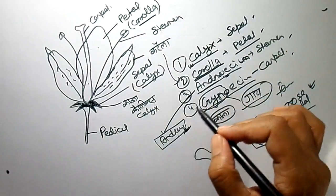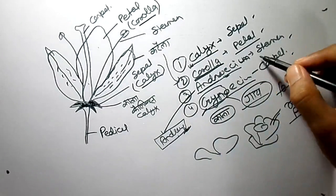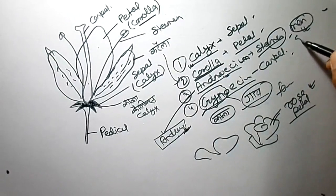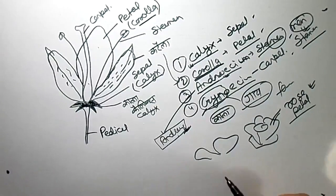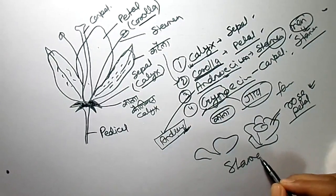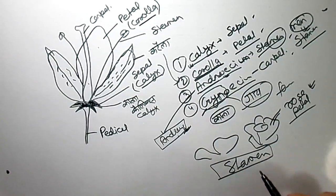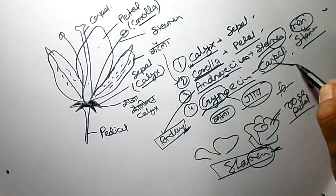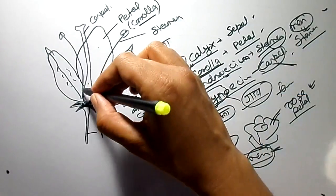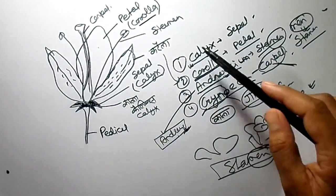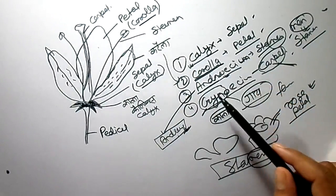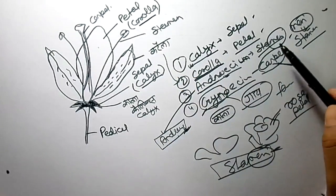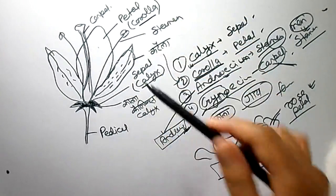Androsium — we memorized it by Andrew, and this is the male part. So 'stamen' — you can see 'men' in stamen, so stamen is a male part. And for Gynosium, we memorize 'carpel.' So: Calyx, Corolla, Androsium, Gynosium — and their single units are sepal, petal, stamen, and carpel.